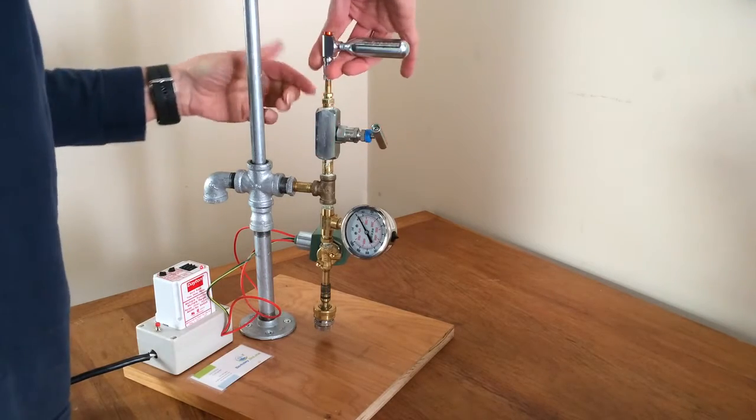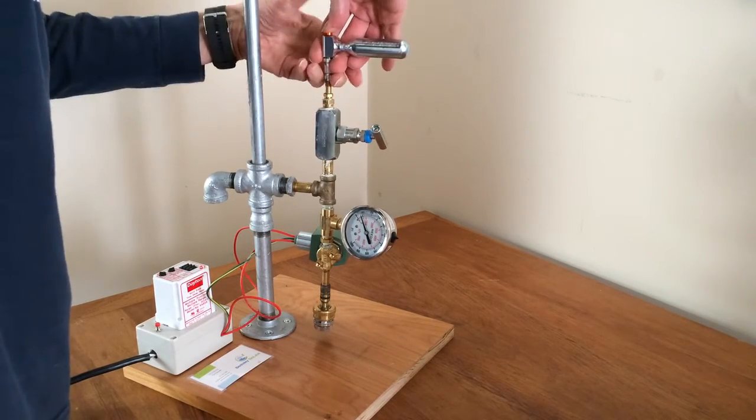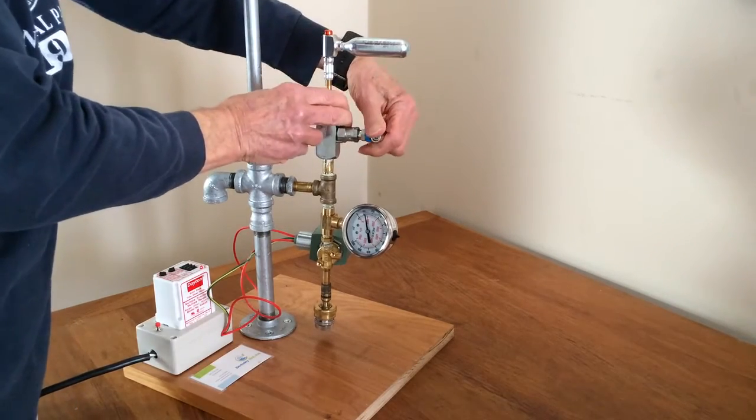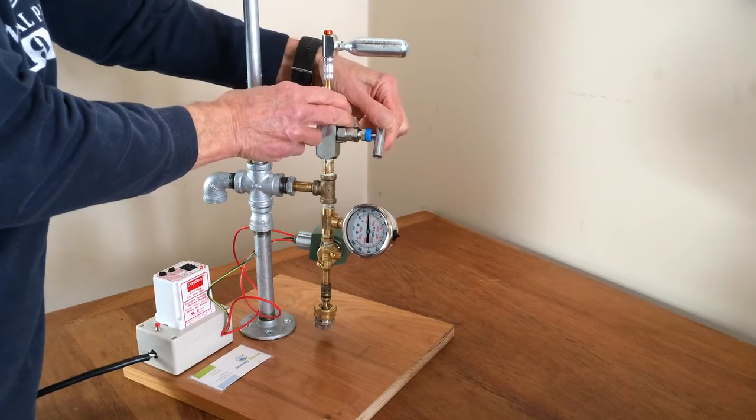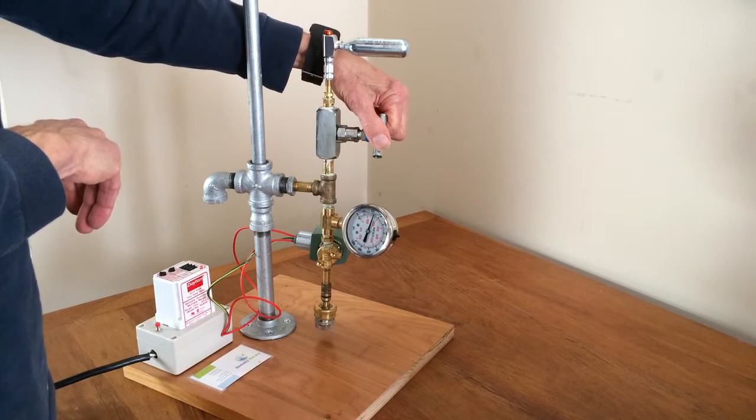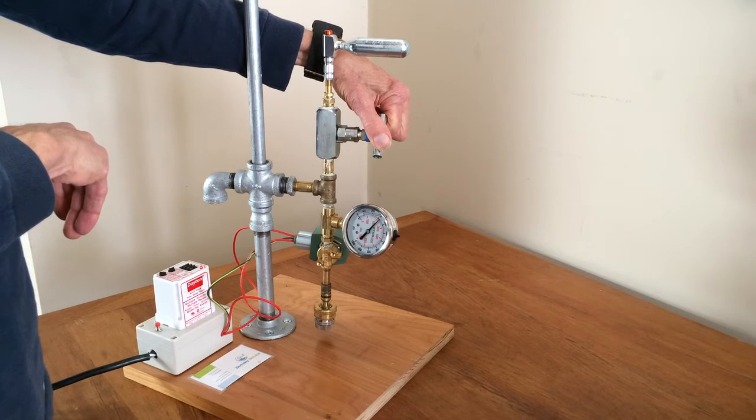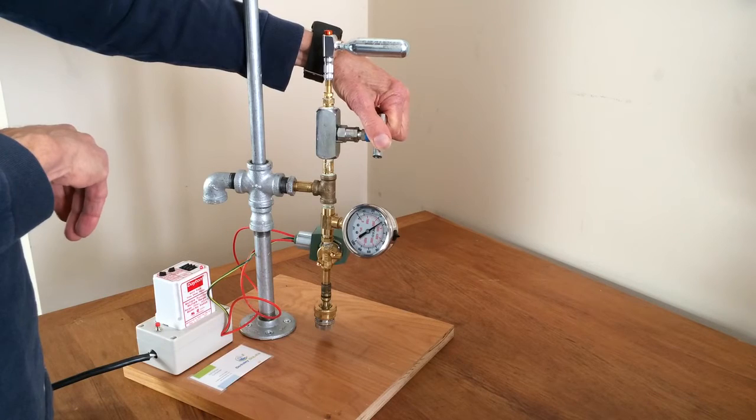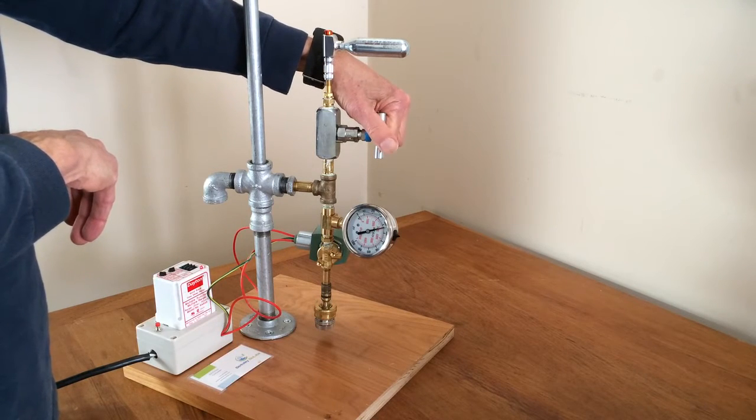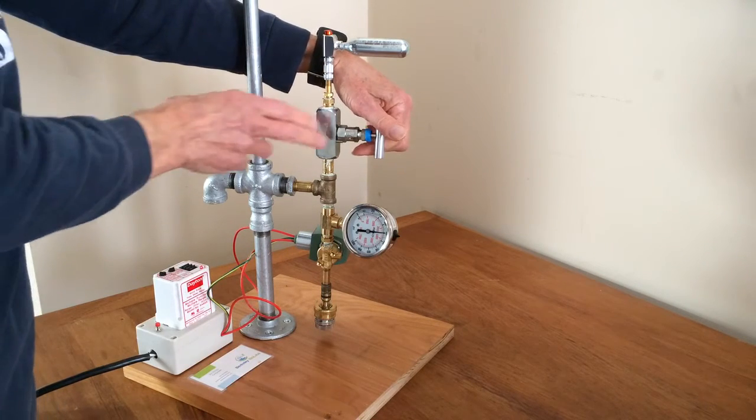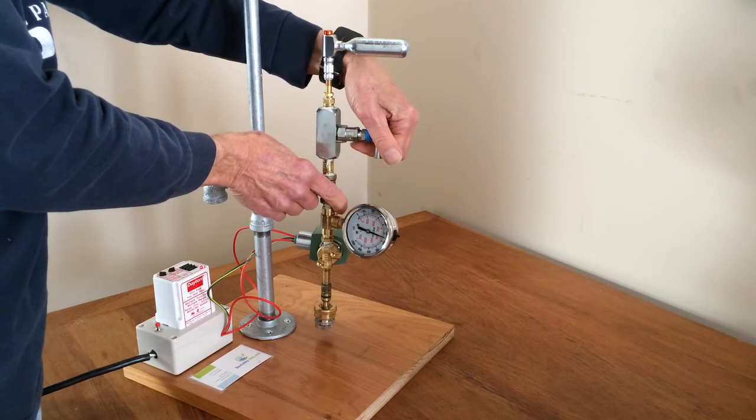So you can see the needle is climbing. We'll go up to 650 psi. Using the valve you can control the pressure and set it exactly where you want it. So now it's at 650.